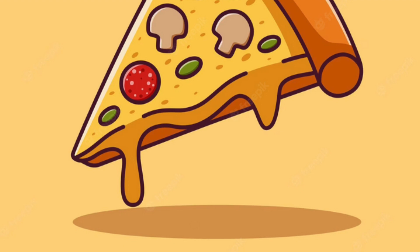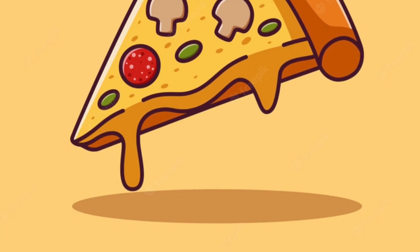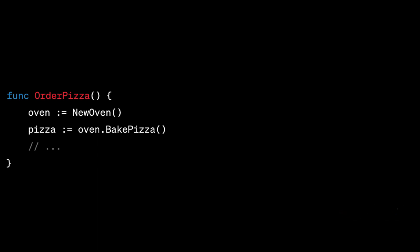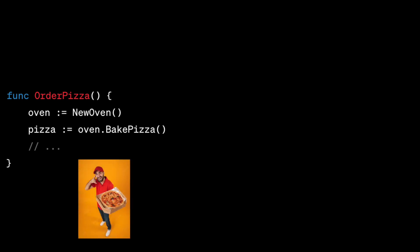Let's look at a code example. We have a function called `orderPizza`. First, it creates a new oven by calling the `newOven` function, then it calls the `bakePizza` method on that oven. This way we order a pizza, but the function is creating its own dependency — the oven — instead of having it provided.